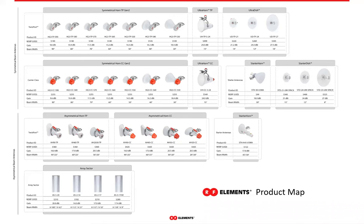Our product range covers antennas, integration platforms and brackets. But today we'll mainly speak about the antennas, because obviously they are the main product line, and a little bit about the integration platforms at the end. The product map you see shows our antennas organized according to beam shape, connector interface, and gain. The beam shape changes in a vertical direction — symmetrical antennas are in the top two lines and asymmetrical are below. In the horizontal direction, gain increases from left to right.